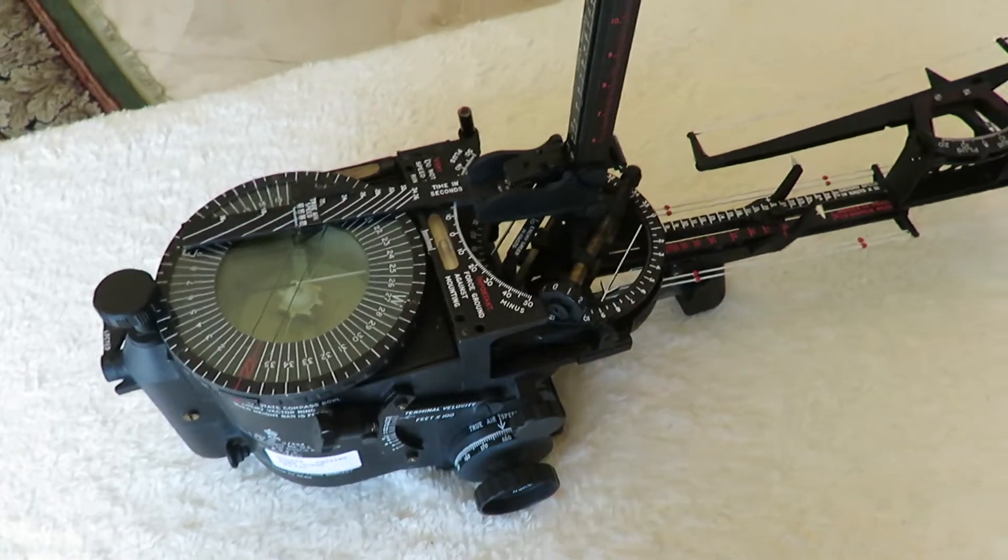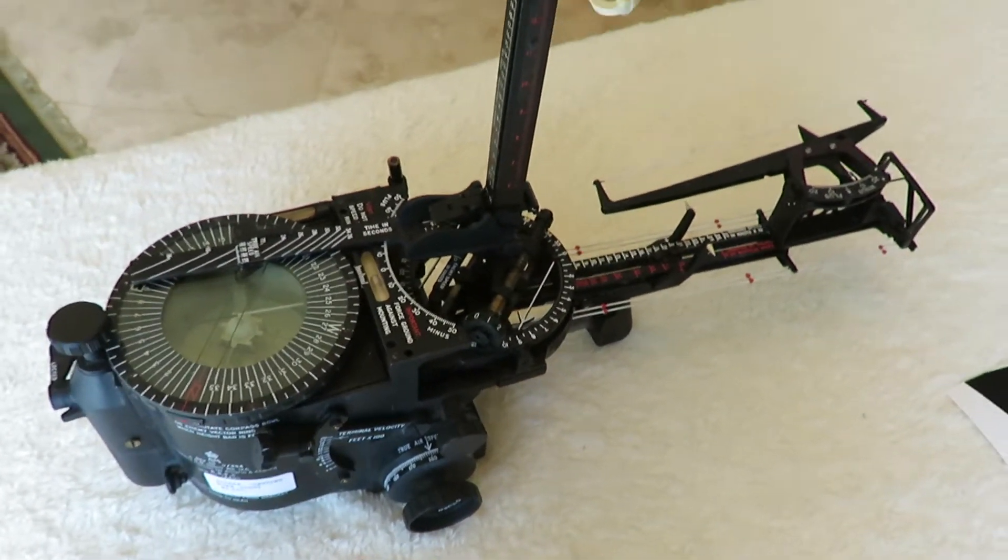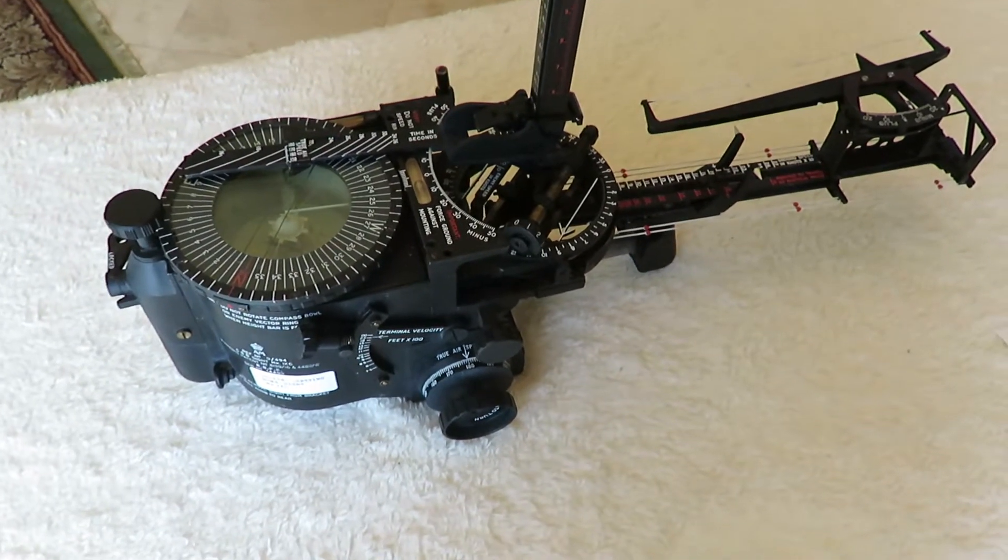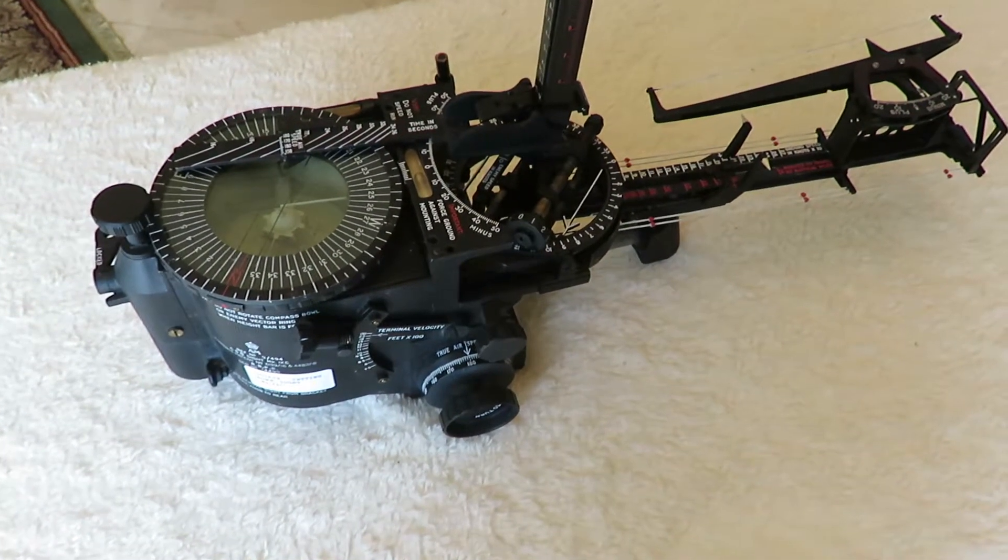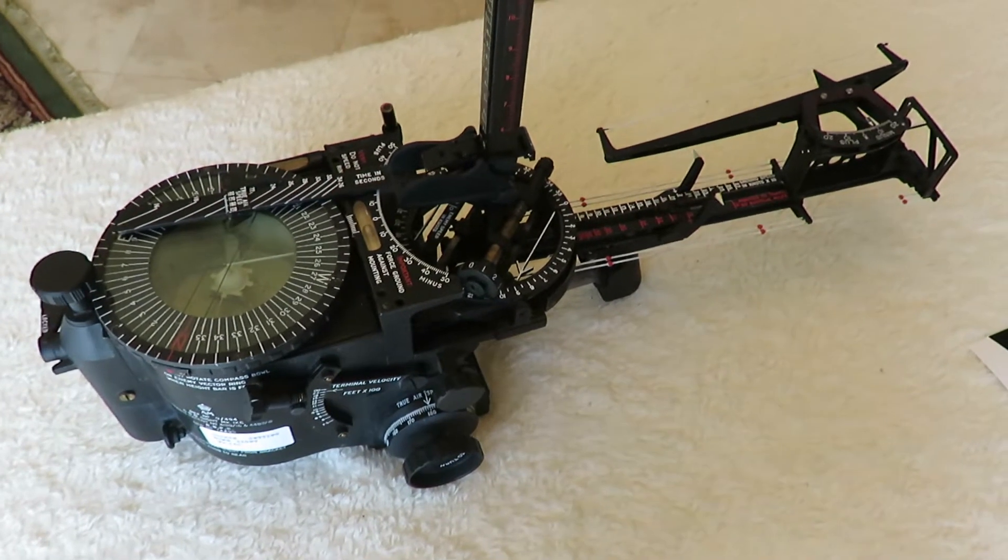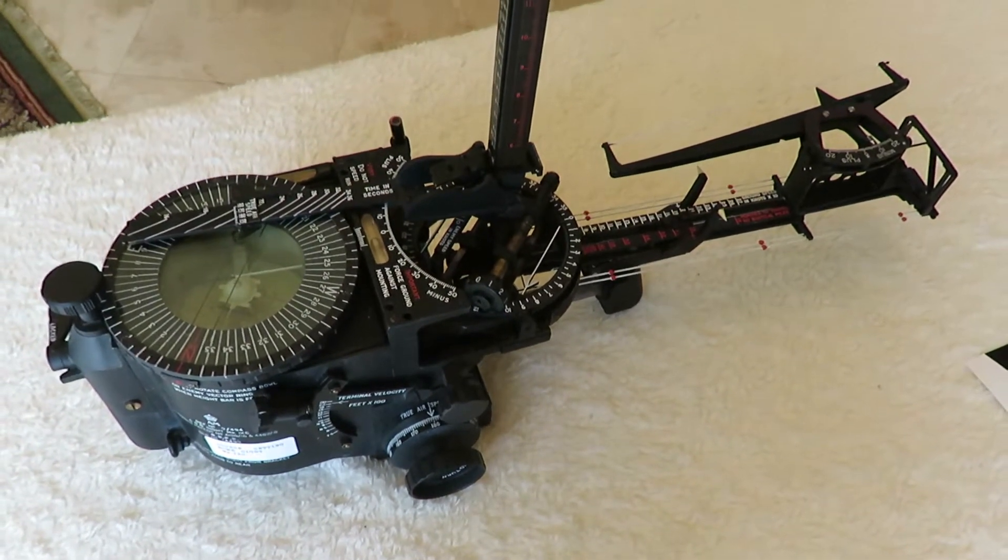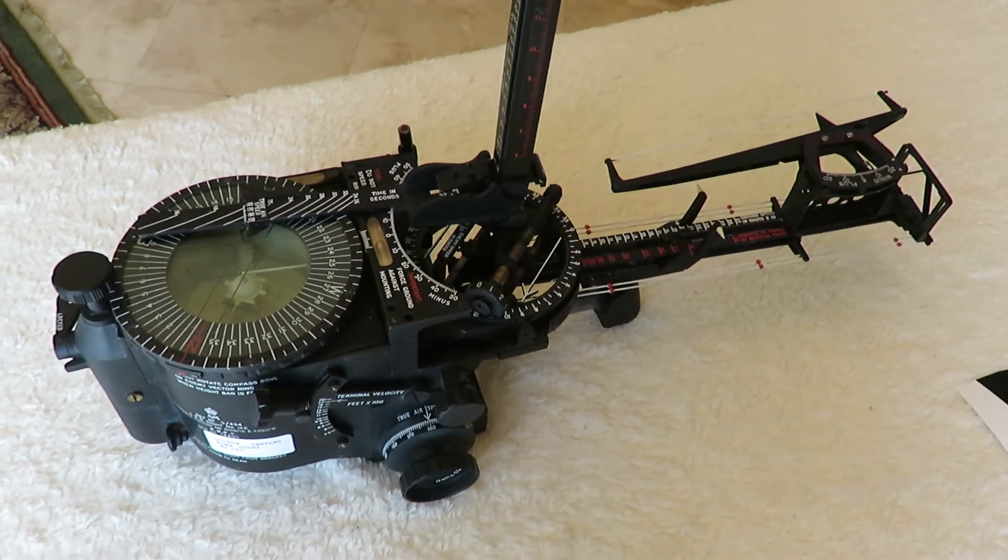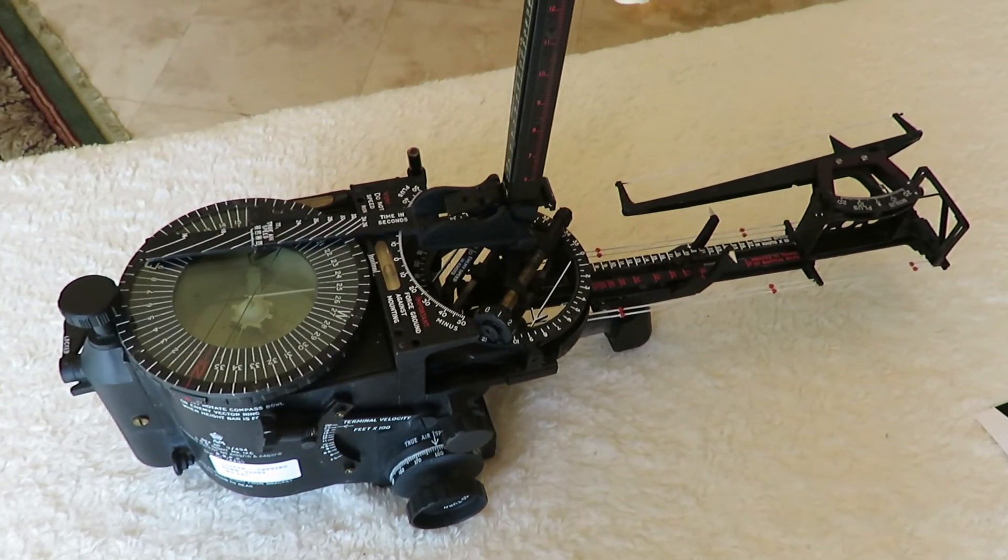This bomb sight worked very well for the RAF, but clearly there were limitations, and more accuracy was needed. It eventually evolved into both the stabilized automatic bombing system, which was gyroscopically stable, but a more direct descendant was the Mark 14 bomb sight, also known as the American T-1 bomb sight.